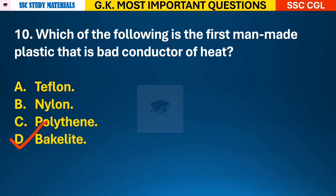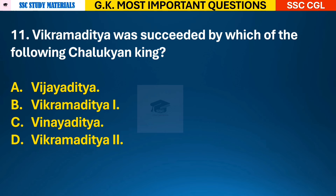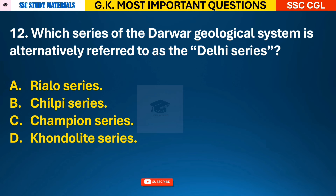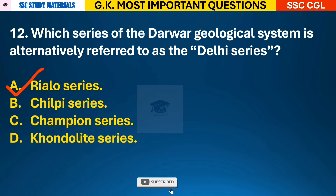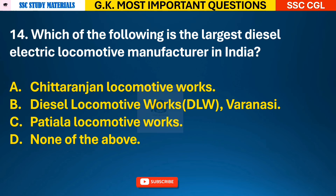Question 10: Which of the following is the first man-made plastic that is a bad conductor of heat? Answer D - Bakelite. Question 11: Vikramaditya was succeeded by which of the following Chalukyan king? Answer C - Vinayaditya. Question 12: Which series of the Dharwar geological system is alternatively referred to as the Delhi series? Answer A - Realo series.